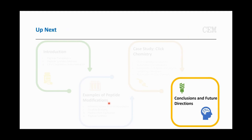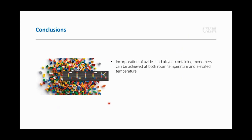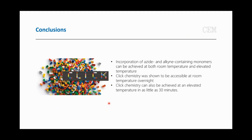In conclusion, we are able to incorporate azide and alkyne-containing monomers at both room temperature and elevated temperature using our automated systems. We were able to get access to click chemistry products at room temperature overnight, and also achieve this at elevated temperatures in as little as 30 minutes. The placement of the azide versus alkyne and the actual location of click chemistry seems to have little effect on the crude purity, which tells you how versatile this chemistry has the potential to be on automated systems.